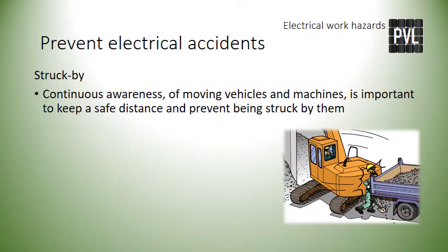Being struck by a moving vehicle or machine is the number two cause of death in the construction industry, per the U.S. Department of Labor 2019. Continuous awareness of these moving vehicles and machines is important to keep a safe distance and prevent being struck by them. Establishing eye contact and using established hand signals to communicate with operators of moving equipment is important. Wearing highly visible and reflective clothing can warn moving equipment operators of your location. However, maintaining a safe distance from moving or operating equipment is the best way to prevent being struck.